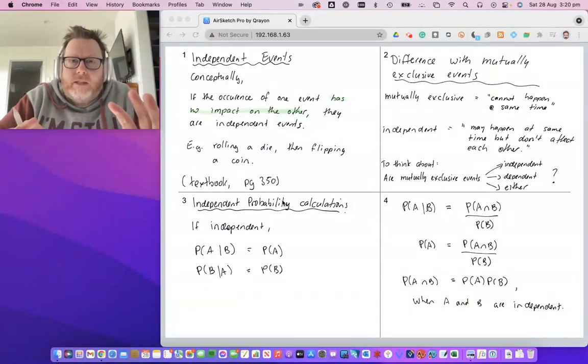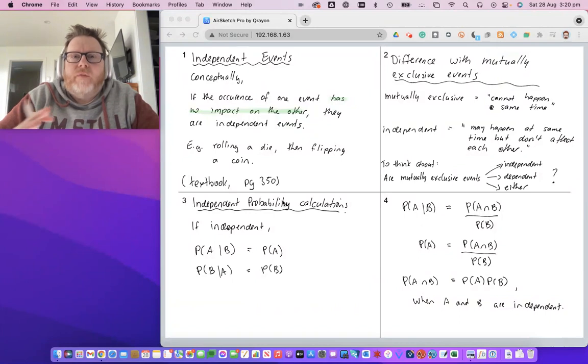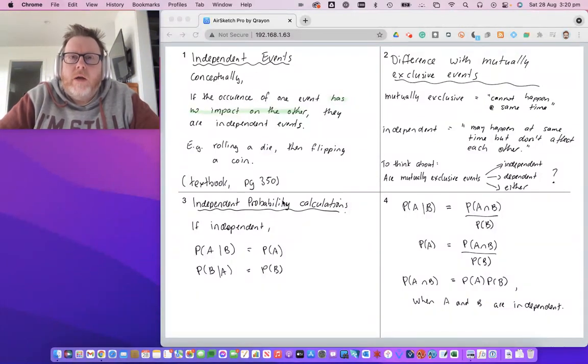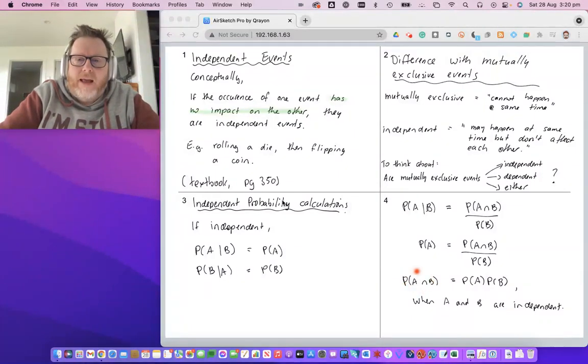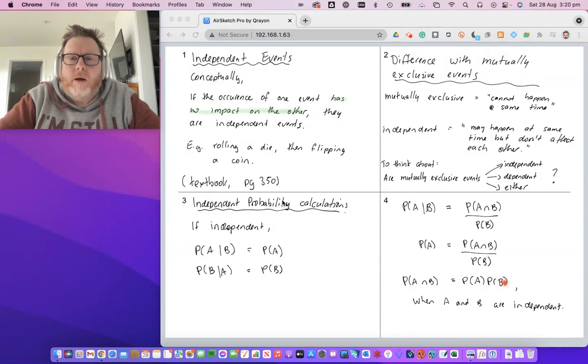This is one of those things which we call an if and only if statement. In other words, if I can show that the probability of A intersect B - if I can show that this value here is the same as multiplying the two probabilities together - then it must be that A and B are independent events.